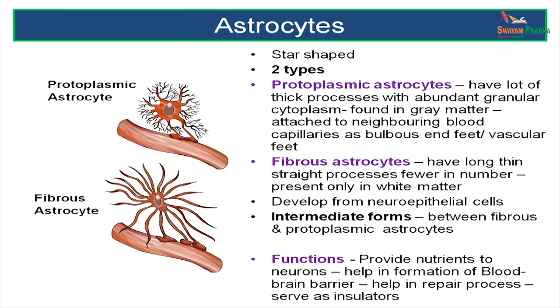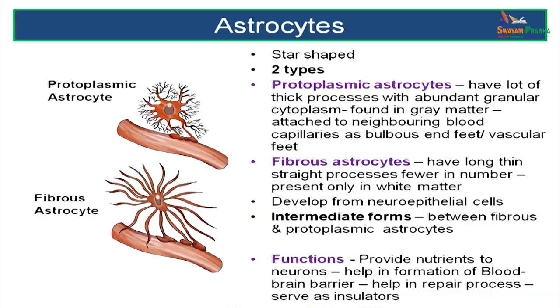The second type is the astrocyte — 'astro' means star-shaped so it has many processes. Astrocytes can be further classified as protoplasmic and fibrous astrocytes. Fibrous astrocytes are more thread-like whereas protoplasmic astrocytes have a fuller structure. The protoplasmic astrocyte has thicker processes with end feet attached to the blood vessel. The fibrous astrocyte has long and thin processes, fewer in number, and is present only in the white matter. There are also intermediate forms in between. The function of astrocytes is to provide nutrition to neurons as they are attached to capillary vessels.